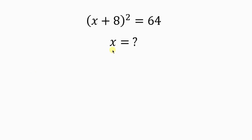Let's solve for all values of X given that (X + 8)² is equal to 64. We're going to be using three methods to solve this question. So we start with Method 1.